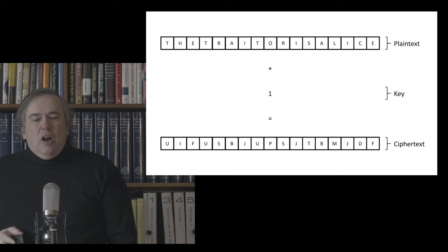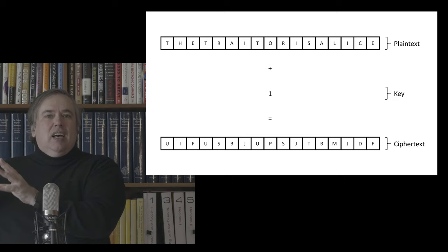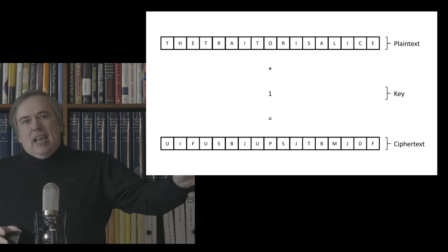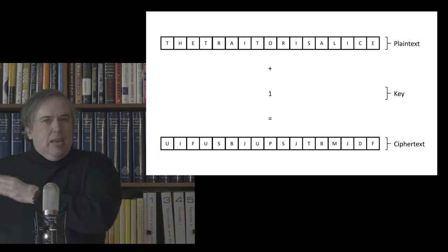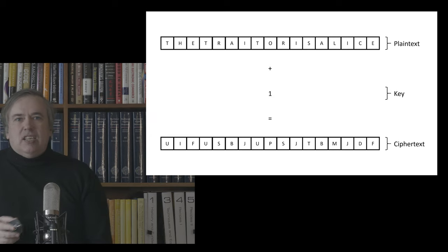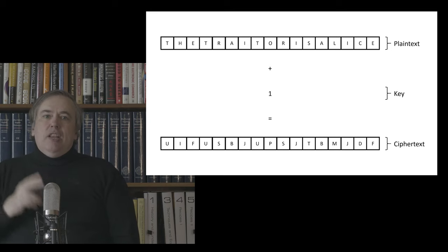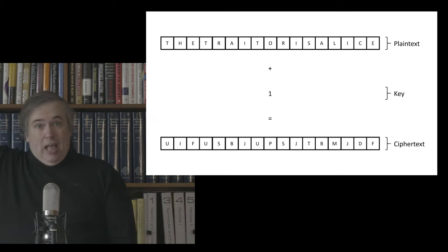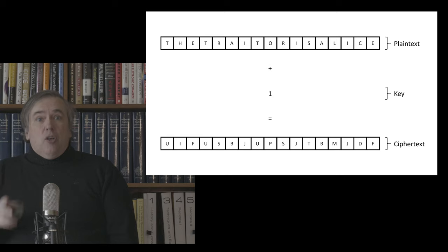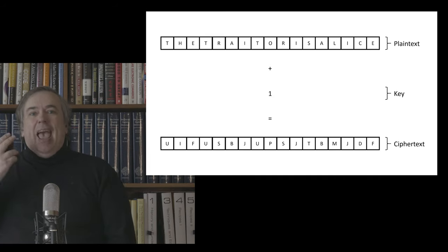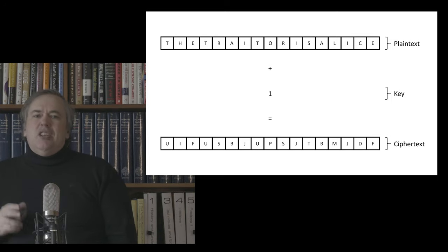Caesar ciphers are junk, but we can make them more secure by mixing the target alphabet up completely so that any letter can potentially map to any other letter, without keeping the same order. Now the number of potential output permutations is 26 factorial — that's more than 2 to the power 88, an 88-bit key. Surely the work factor is tremendous? Well, no it's not.